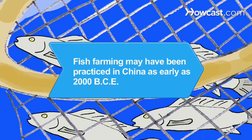Did you know Fish farming, also called aquaculture, has been around for centuries and may have been practiced in China as early as 2000 BCE.